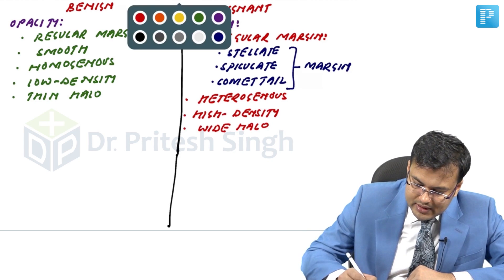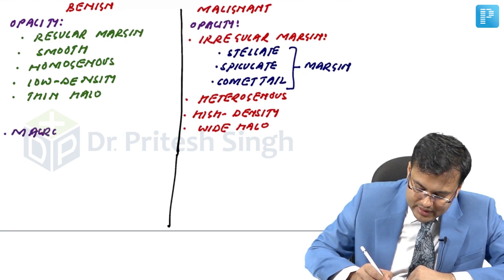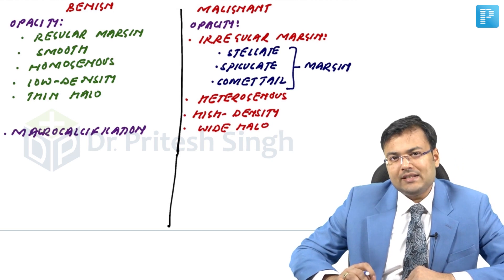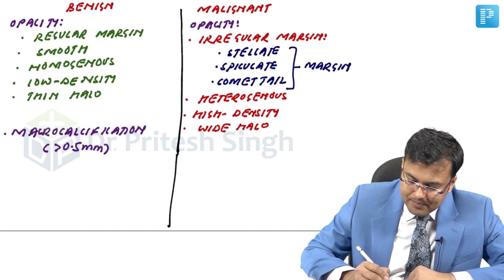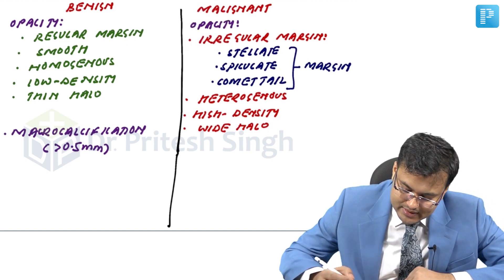The second feature to look for is calcification. In benign disorders, there is macrocalcification — size more than 0.5 mm. Whereas in malignancy, there is microcalcification — size less than 0.5 mm.